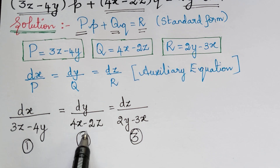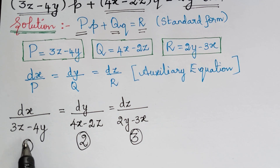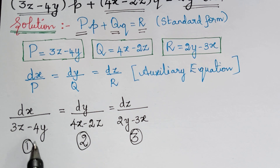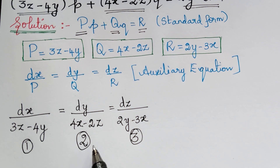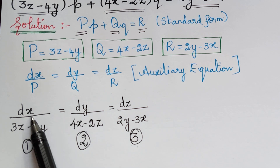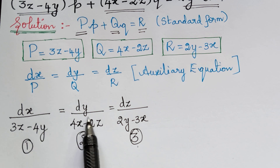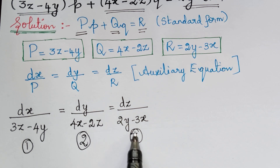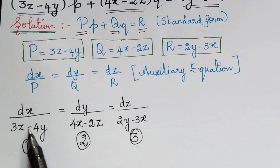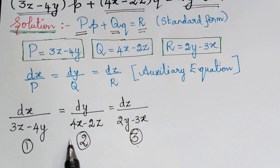By comparing ratios 1 and 2, we observe that there are three variables x, y, z, so we cannot use the method of grouping. Similarly, comparing 2 and 3, and 1 and 3, we still have three variables each time. We have only dx and dy in ratios 1 and 2, dy and dz in 2 and 3, and dx and dz in 1 and 3. So we cannot use the method of grouping and hence we must use the method of multipliers.